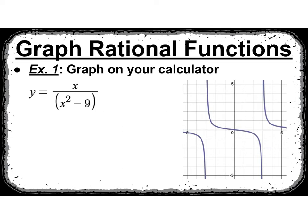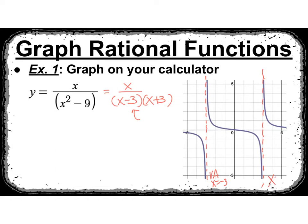Let's see if we can make some sense of this. If I factor my denominator, that's a difference of two squares, so it's going to factor to x minus 3 and x plus 3. We talked about limiting our domain — x can never be negative 3, so I'm going to have a vertical asymptote at x equals negative 3. x can never be positive 3, so I'm going to have a vertical asymptote at x equals 3.